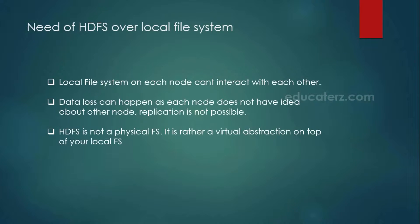That layer we call it as Hadoop distributed file system. This HDFS is not a physical thing, because whatever you are storing as part of your HDFS is also internally going to be stored in your local file system itself. But once you navigate to your file system structure, you cannot see your HDFS files as part of your local file system. To access the files stored as part of your HDFS, you must use your HDFS commands or a UI that is also available. Either of these two things you can use to access your HDFS; otherwise, you cannot access your Hadoop distributed files from your local file system.